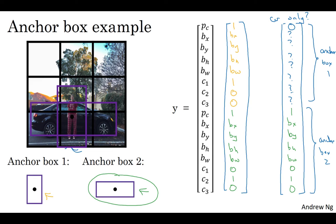Now, just some additional details. What if you have two anchor boxes but three objects in the same grid cell? That's one case that this algorithm doesn't handle well. Hopefully it won't happen, but if it does, this algorithm doesn't have a great way of handling it. I would just implement some default tiebreaker for that case. Or what if you have two objects associated with the same grid cell but both of them have the same anchor box shape? Again, that's another case that this algorithm doesn't handle well. You implement some default way of tiebreaking if that happens. Hopefully this won't happen in your data set, it won't happen much at all, and so it shouldn't affect performance much.